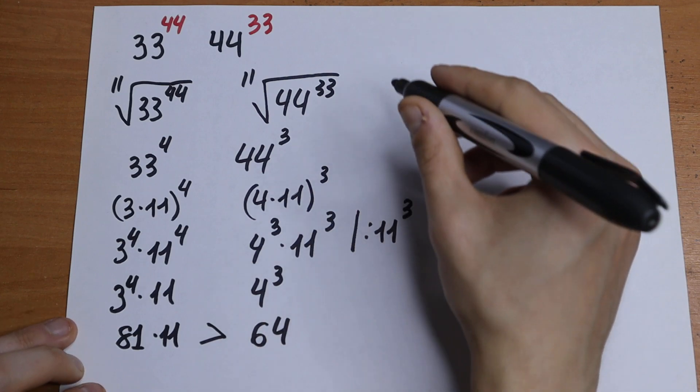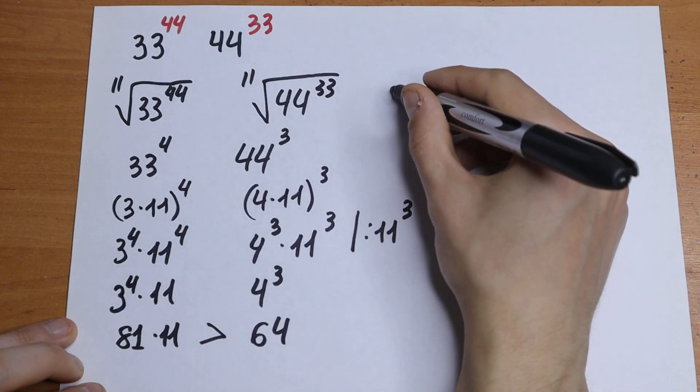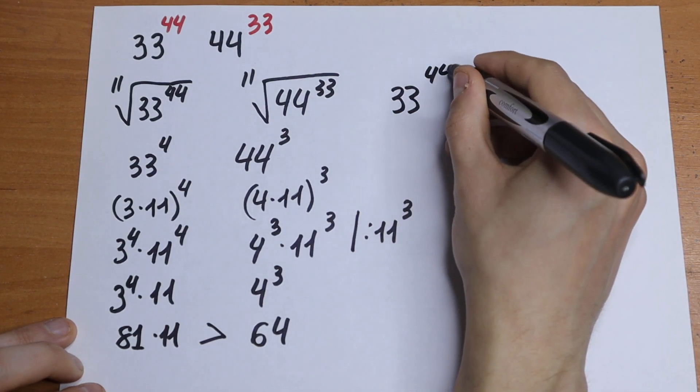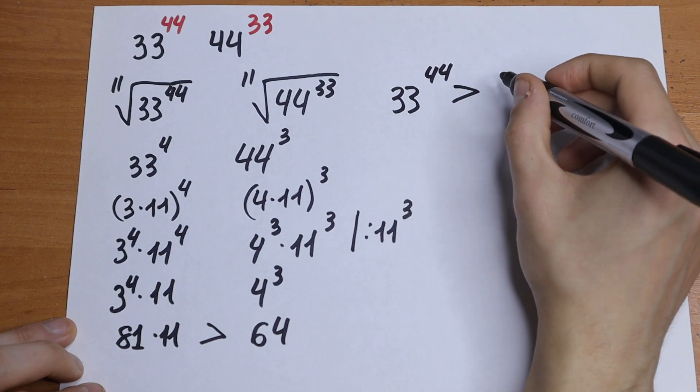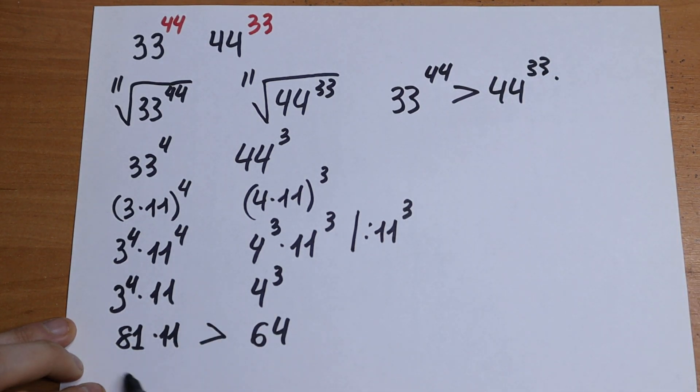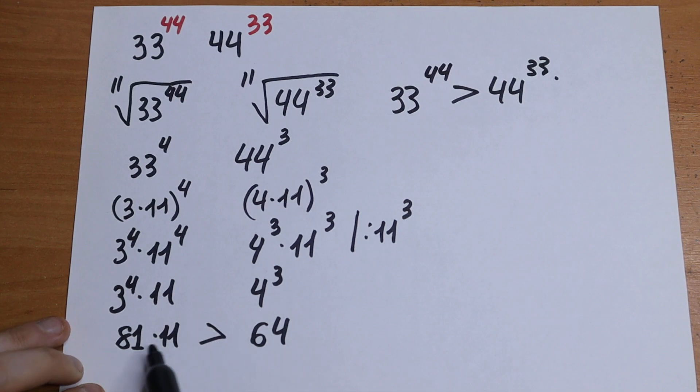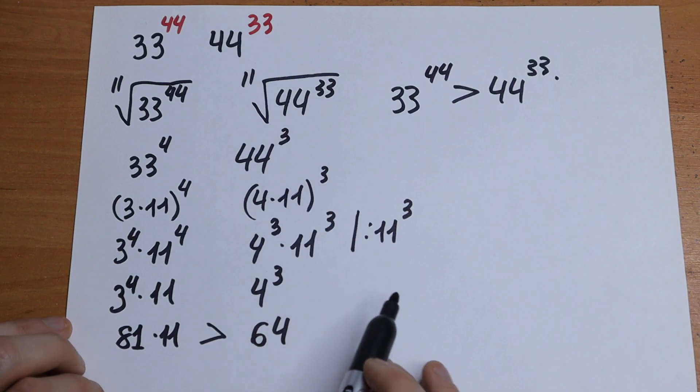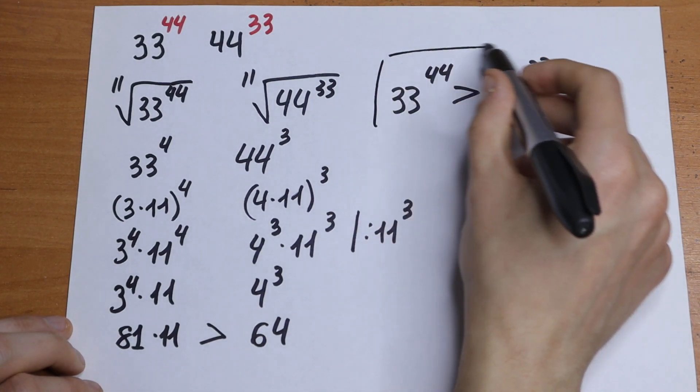So we can write the answer that 33 to the 44th power is bigger than 44 to the 33rd power because this equation shows us that the left is greater than the right. So this is the answer.